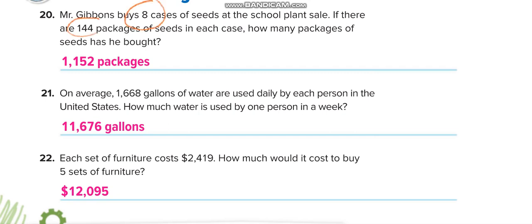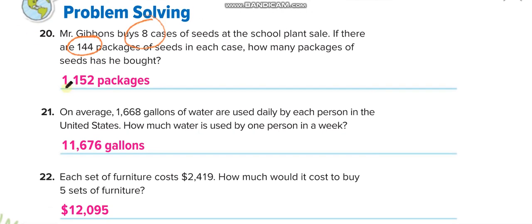That is equal to 1,152 packages. On average, 1,668 gallons of water are used daily by each person in the United States. How much water is used by one person in a week? We have seven days in a week, and one day they are using this much gallons, so seven times 1,668.